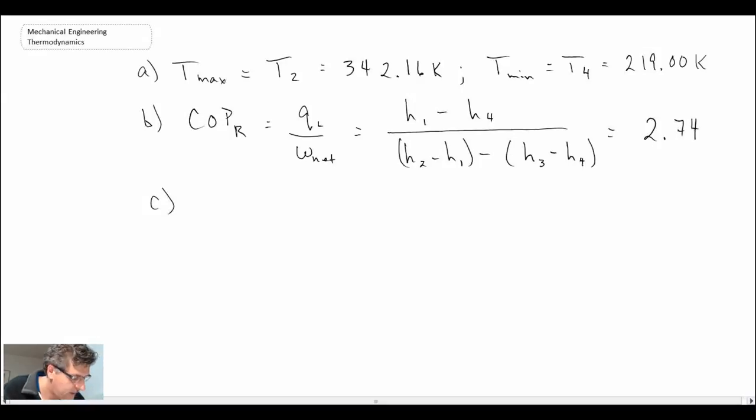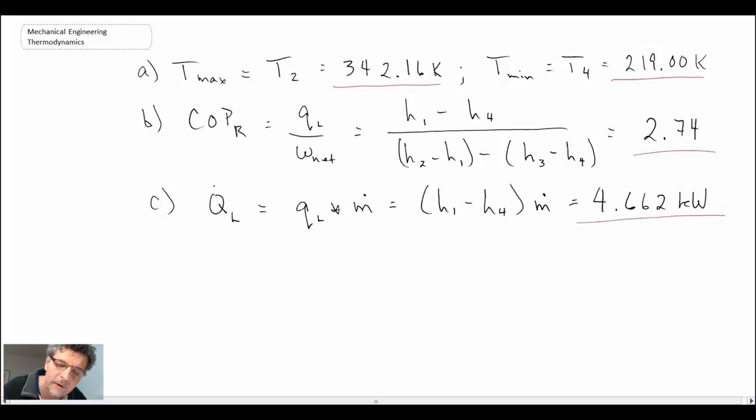Finally, what we want to determine is the amount of cooling that we're providing. Those are the answers to the problem: our max and min temperature, the coefficient of performance, as well as the amount of cooling we get from the cycle knowing the mass flow rate. That concludes the problem of dealing with the gas refrigeration cycle.